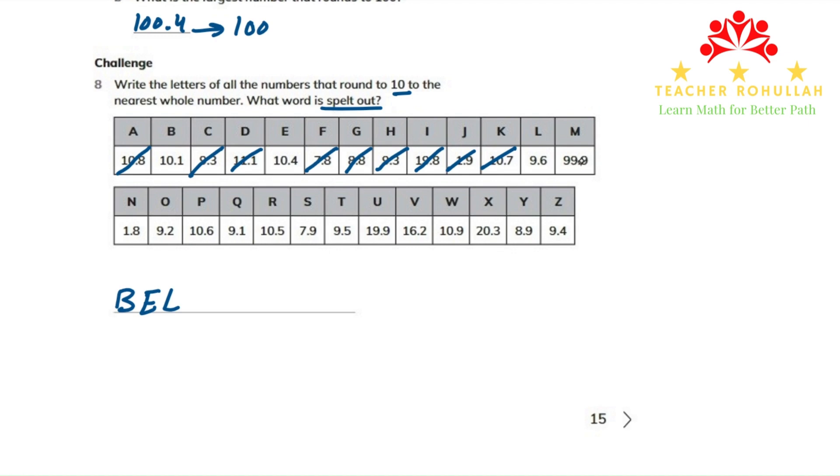And 99.9 rounds to 100, which is very far. And 1.8 rounds to 2. 9.2 rounds to 9. 10.6 rounds to 11. 9.1 also rounds to 9. And 10.5 also rounds to 11. 7.9 rounds to 8. 9.5 rounds to 10.